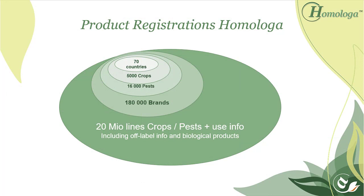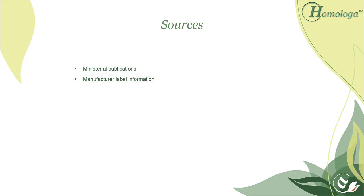The Homologa product registrations represent about 20 million lines of data. This is the information of about 70 countries, which represents about 5,000 crops, 16,000 pests, and 180,000 brands. The sources for all this information come from ministerial publications and manufacturer label information.